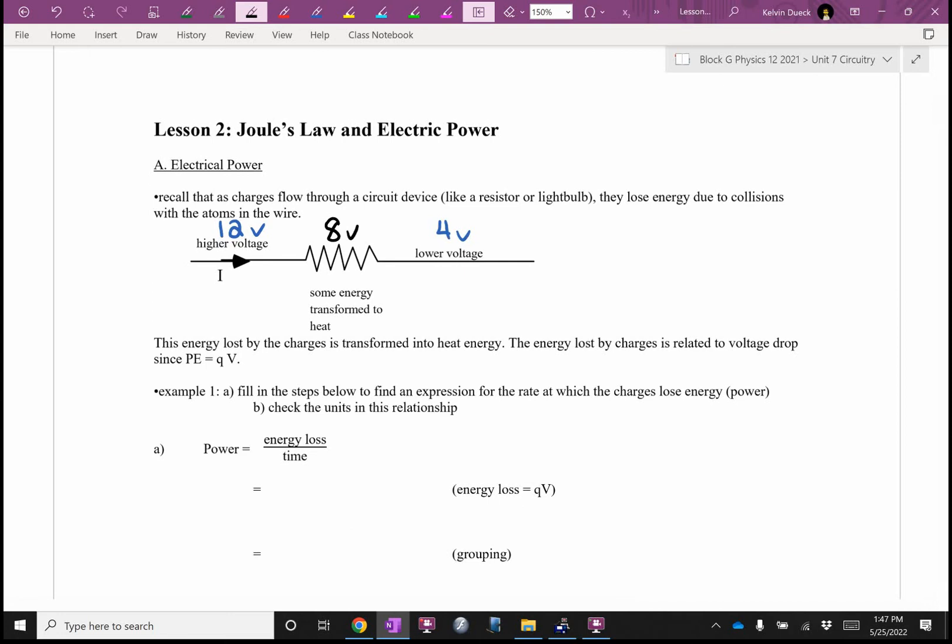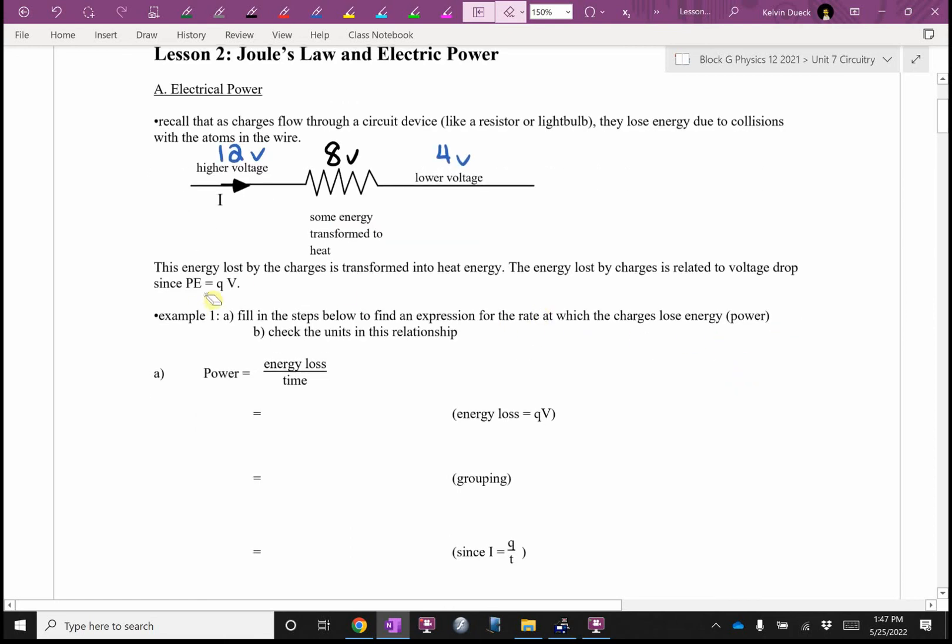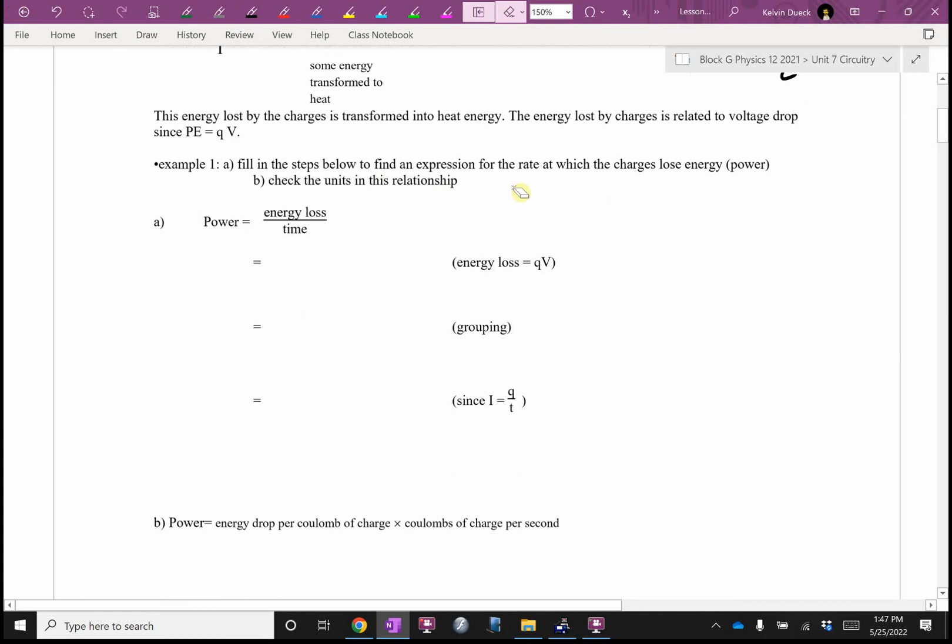This energy loss is typically manifested as heat energy—these objects heat up. The energy lost by charges is related to voltage drop. Since potential energy is QV, we can derive Joule's law. Power is energy loss over time, and energy loss in a circuit is QV over time.